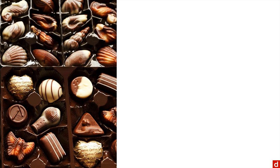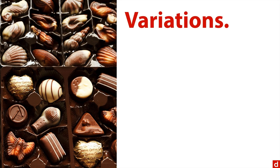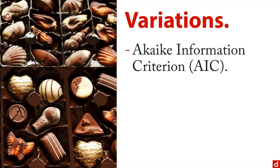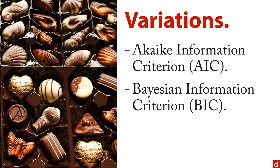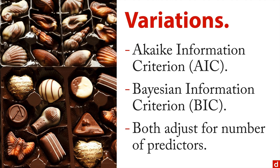There are some variations of the minus-2 log likelihood: the Akaike information criterion (AIC) and the Bayesian information criterion (BIC). Both of these adjust for the number of predictors, because if you have a huge number of predictors you're going to get a really good fit — but you're probably going to have what's called overfitting, where your model is tailored too specifically to the data you currently have and doesn't generalize well. Both AIC and BIC attempt to reduce the effect of overfitting.